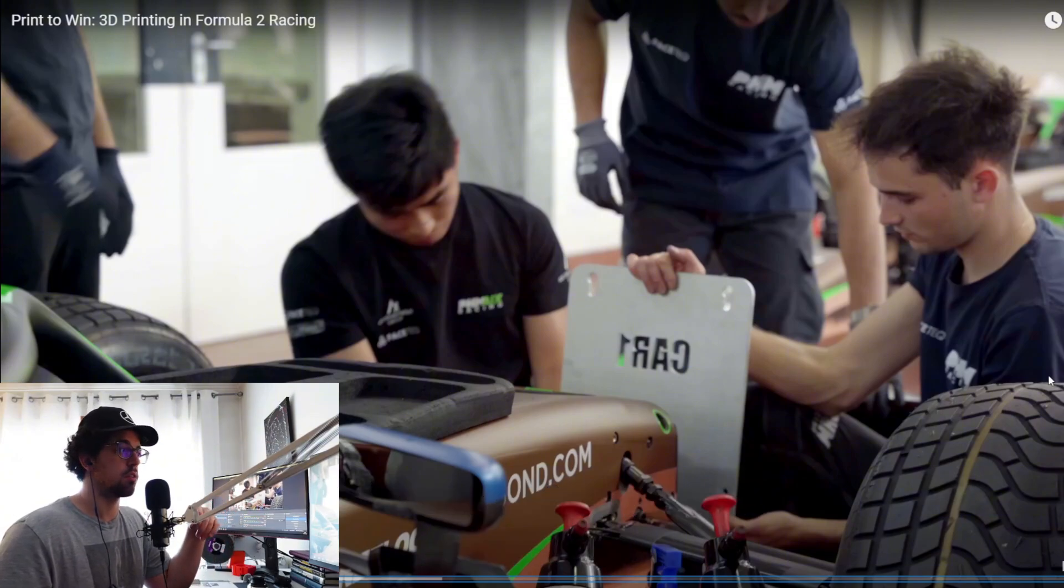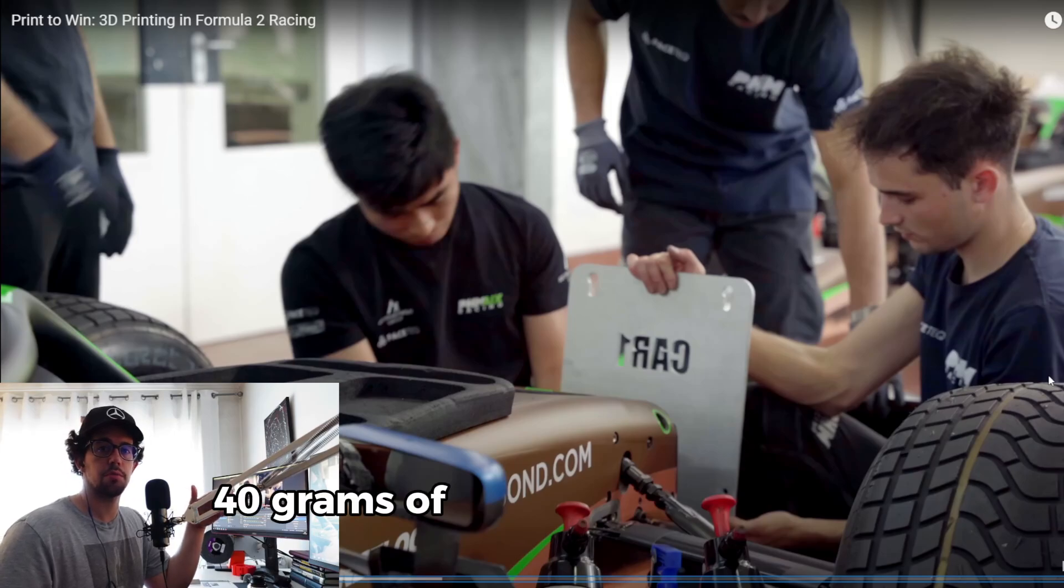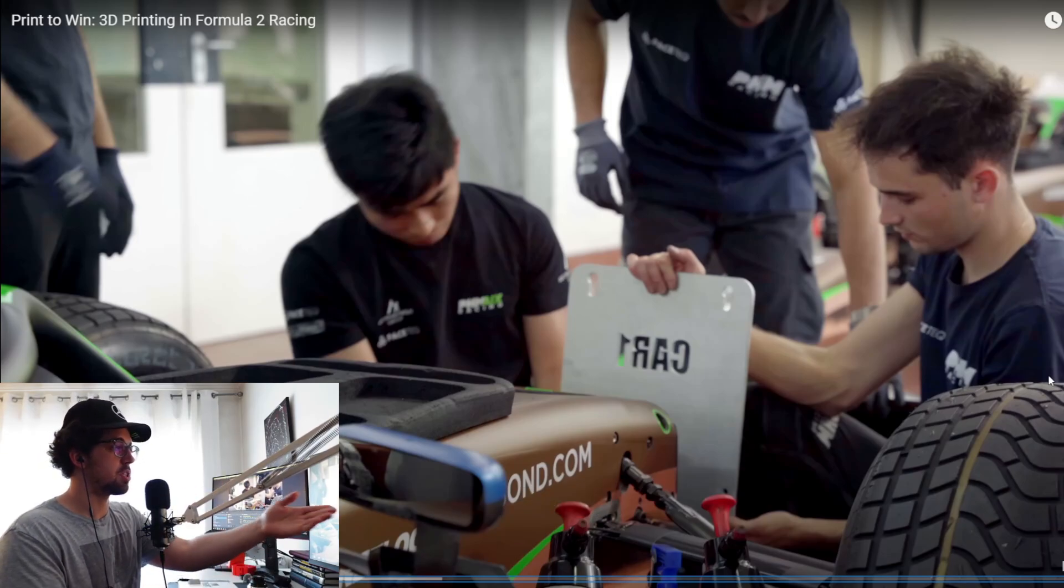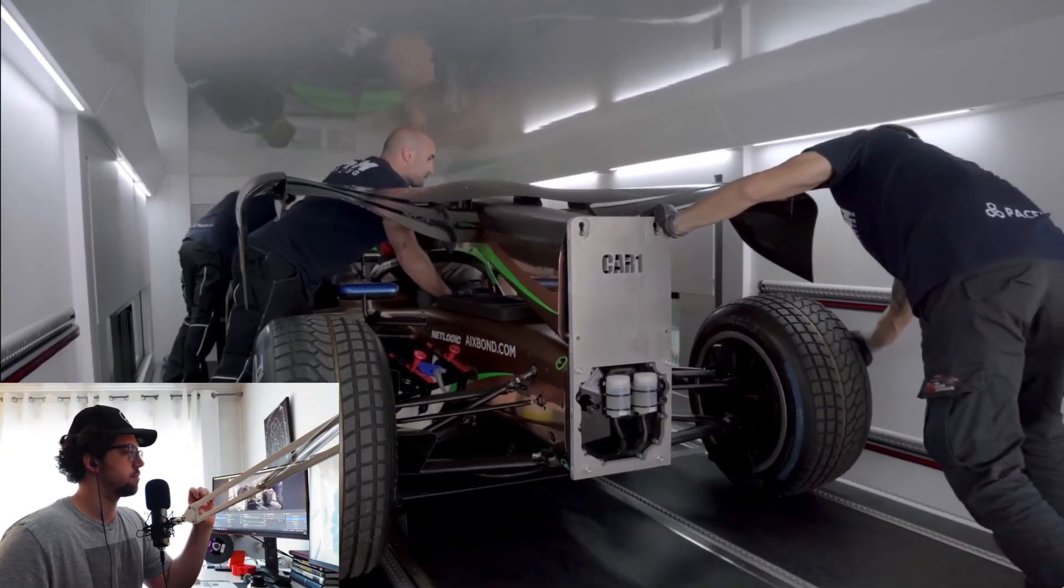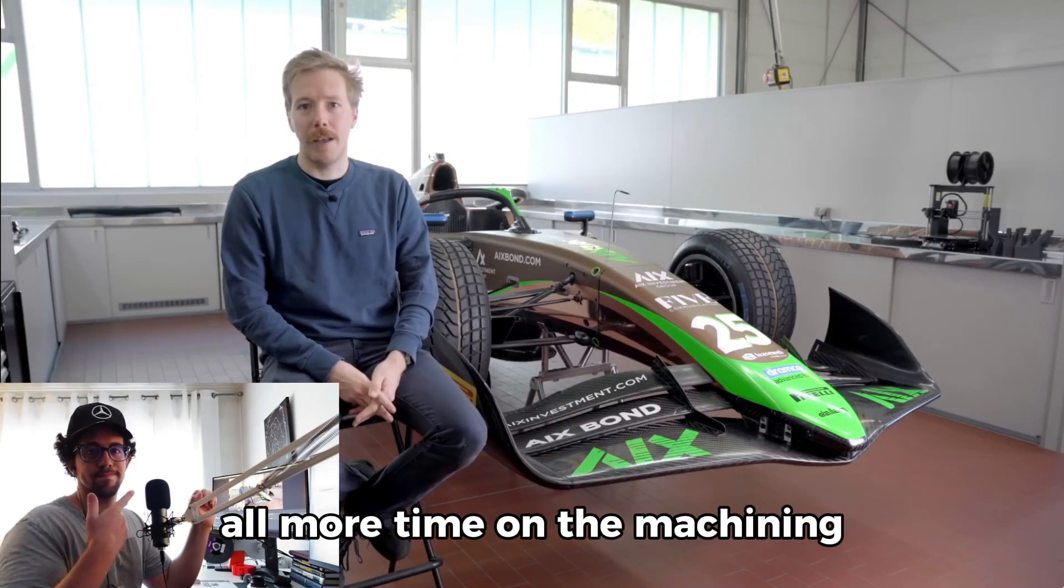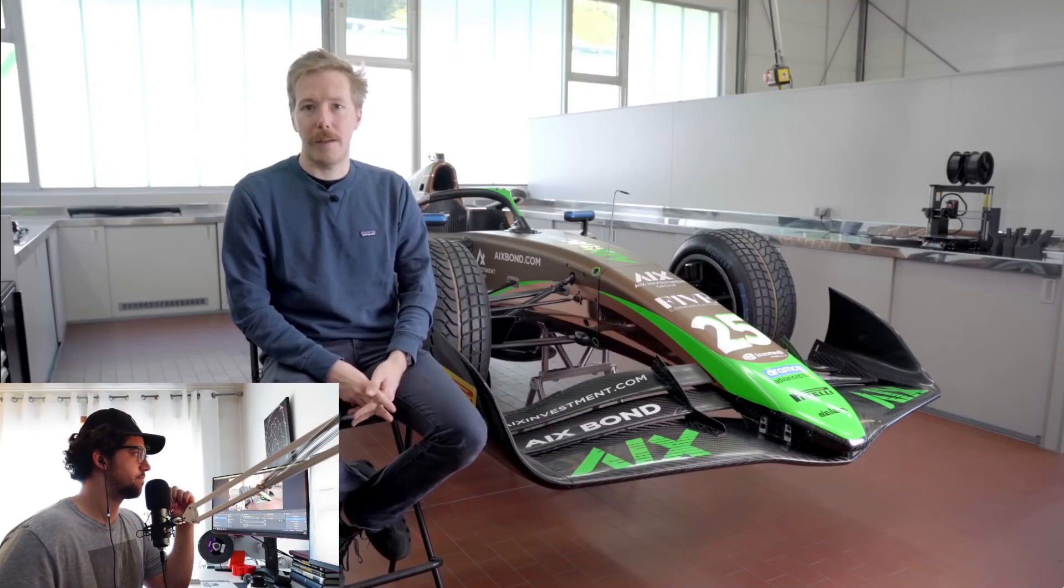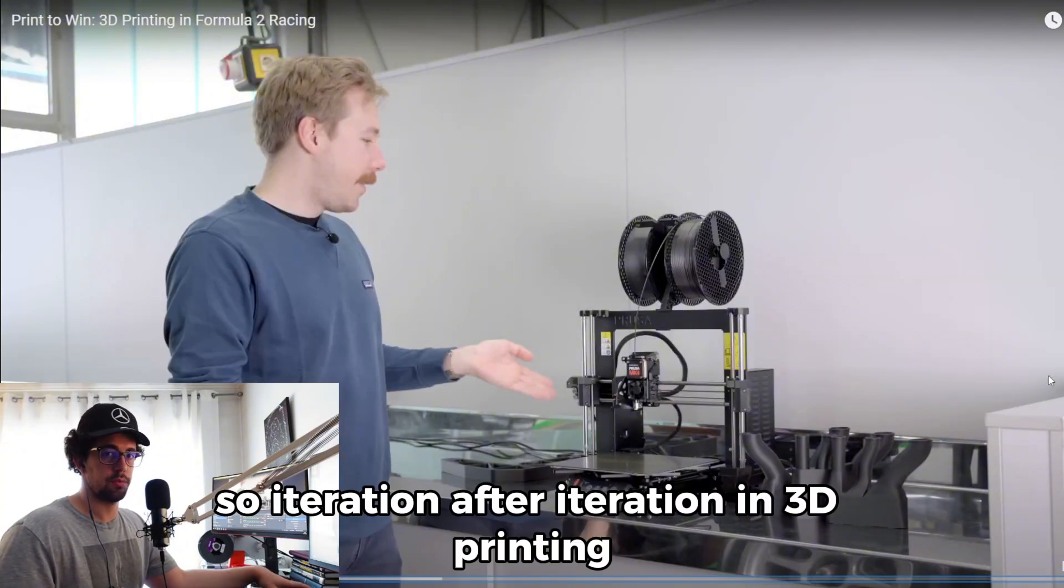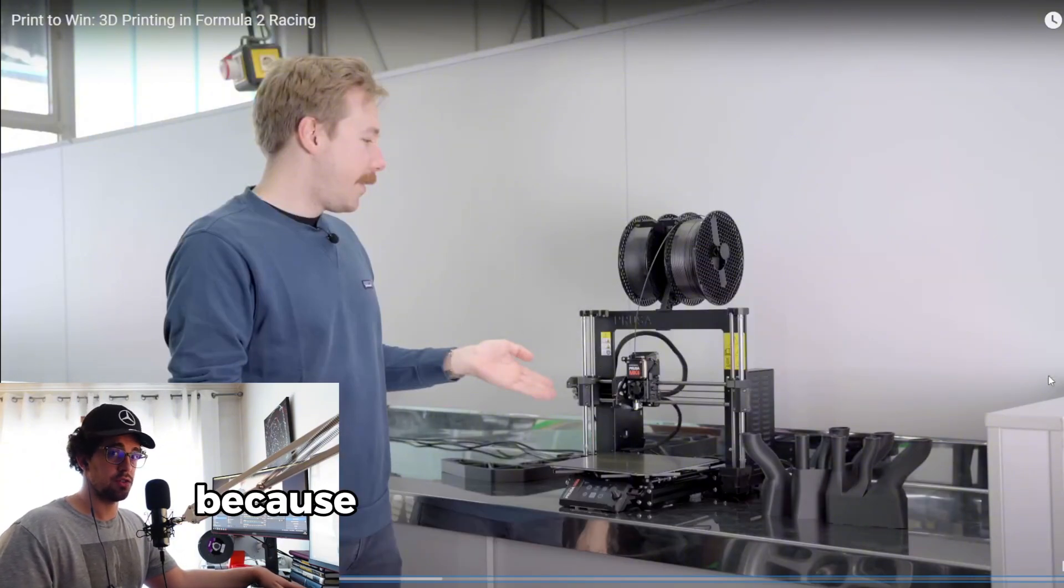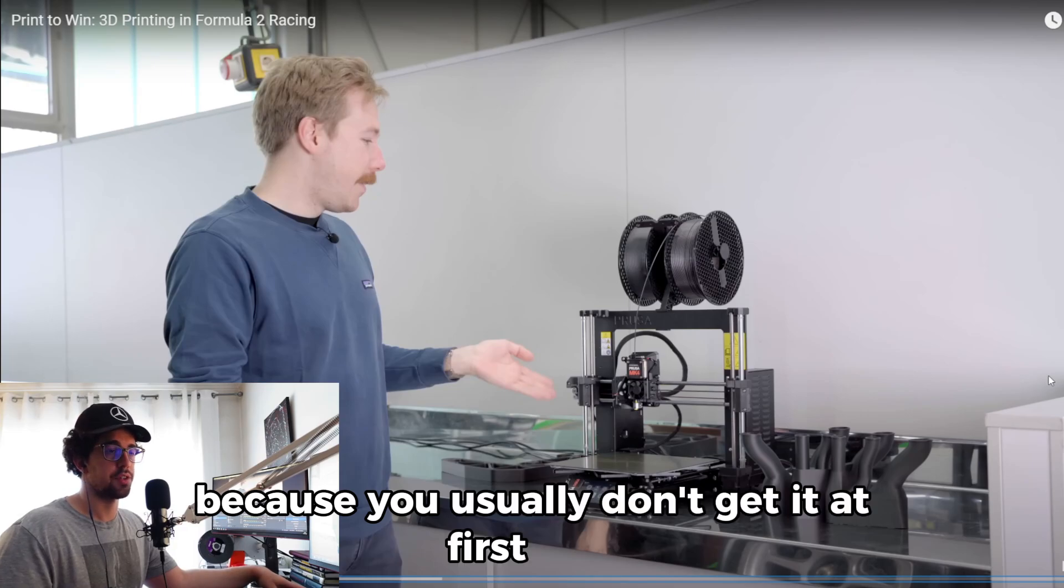If the part is wrong, you only waste like 50, 40 grams of material. If you machine a part like this, it could be like 100 dollars. Spend more time on the CAD, more time on the machining, because you have to do two or three tries. So iteration after iteration in 3D printing is way cheaper because you usually don't get it at the first time.